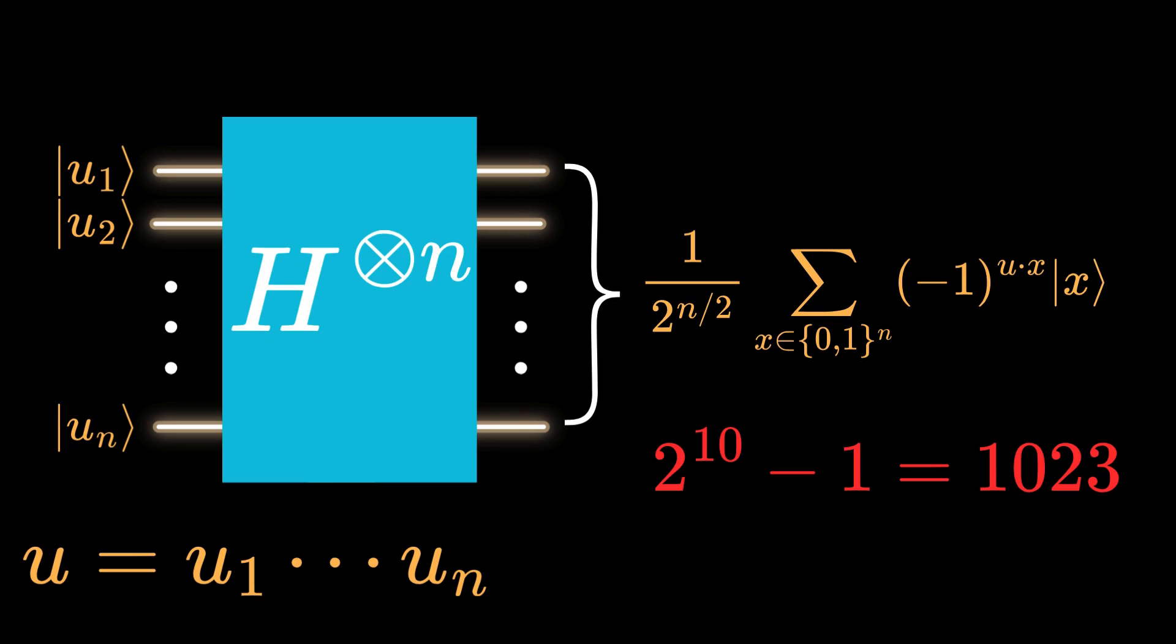For example, with just 10 Hadamard gates, we could represent the superposition of all integers from 0 to 2 to the 10 minus 1, which is 1023. And this is the power of the Hadamard gate to create a superposition efficiently.